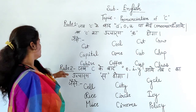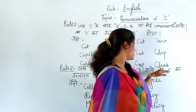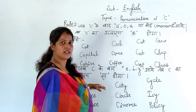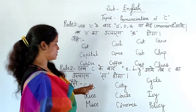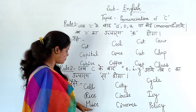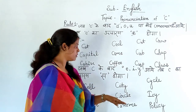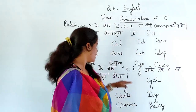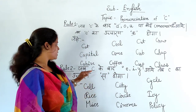Rule Number Two: when C comes after E, I, or Y, then C will be pronounced as 'S' — the 'S' sound. Okay? Now let us see the examples and understand this well: cell, rice, city, circle, cinema, cycle, icy, policy. Okay?